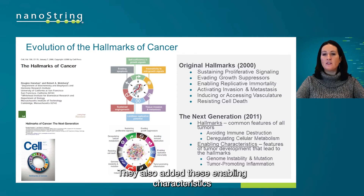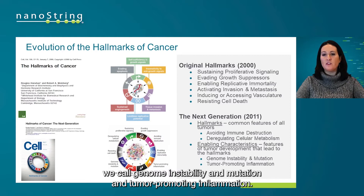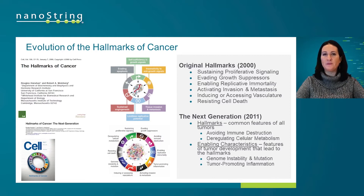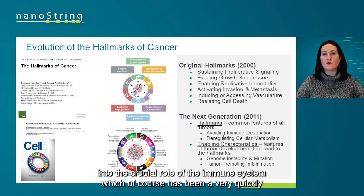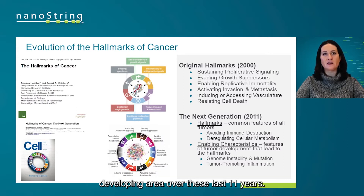They also added enabling characteristics we call genome instability and mutation and tumor-promoting inflammation. These new hallmarks and enabling characteristics gave new insight into the crucial role of the immune system, which has been a very quickly developing area over these last 11 years.